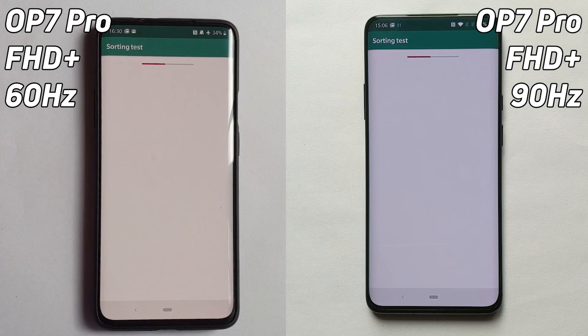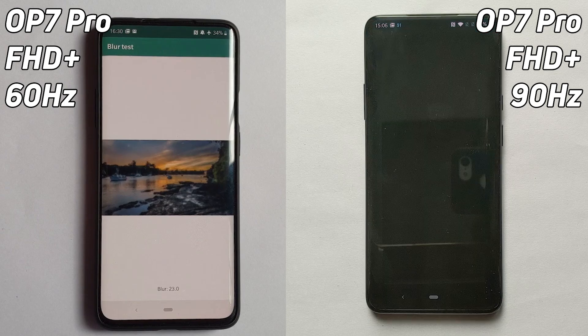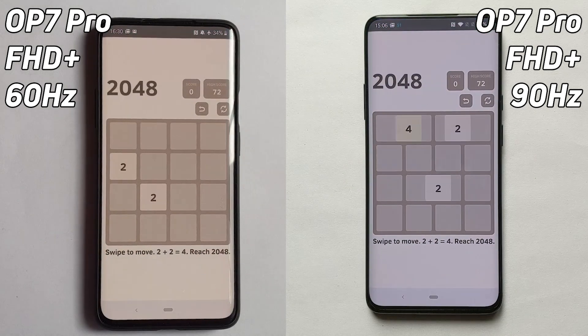We have the OnePlus 7 Pro running in full HD plus at 60 hertz on the left-hand side, and also the OnePlus 7 Pro running in full HD plus with 90 hertz on the right-hand side.